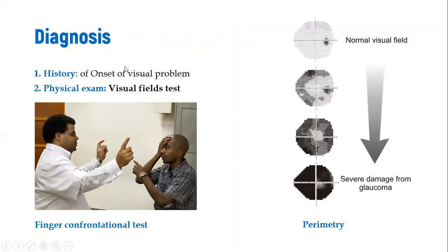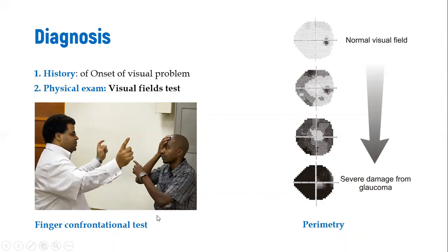Diagnosis involves taking a history of when the visual problem started and physical examination, especially visual field tests using different diagnostic methods. One method is perimetry, where light is shone in a machine and the patient clicks to indicate whether they saw it, mapping their visual field. A simpler method is the finger confrontation test, where the patient indicates whether they can see fingers brought in from different visual fields.